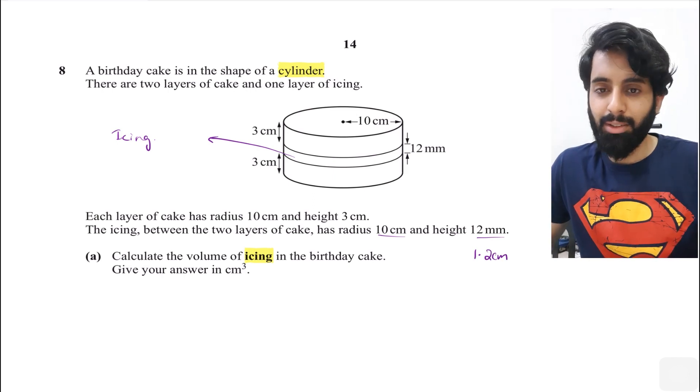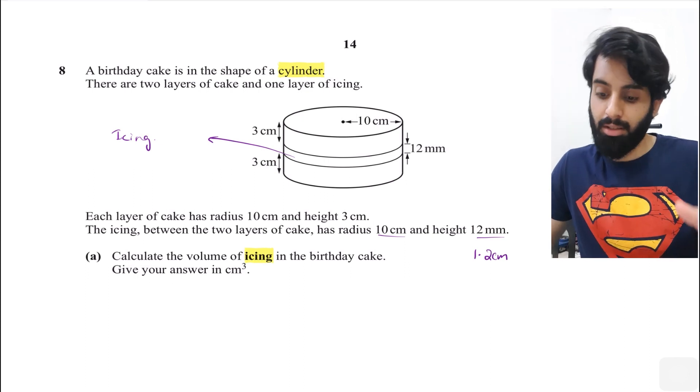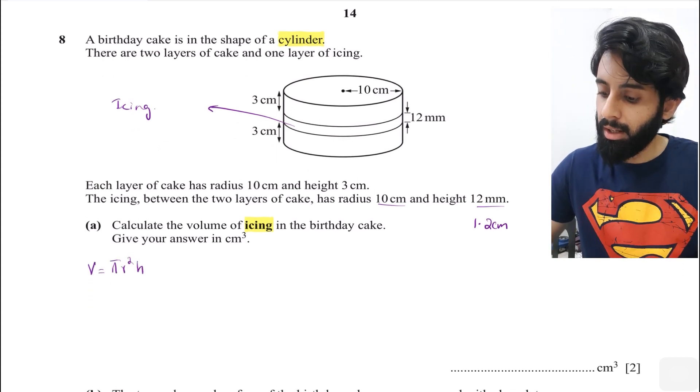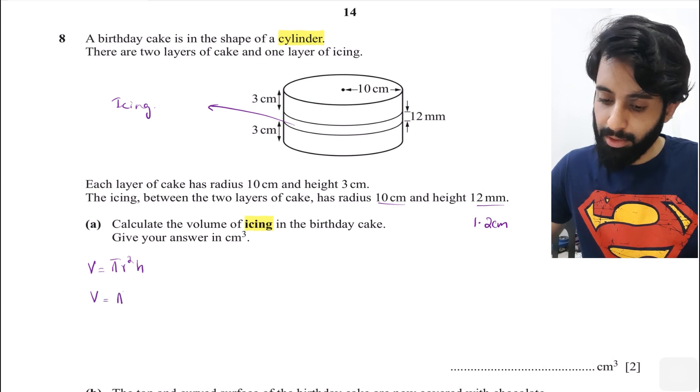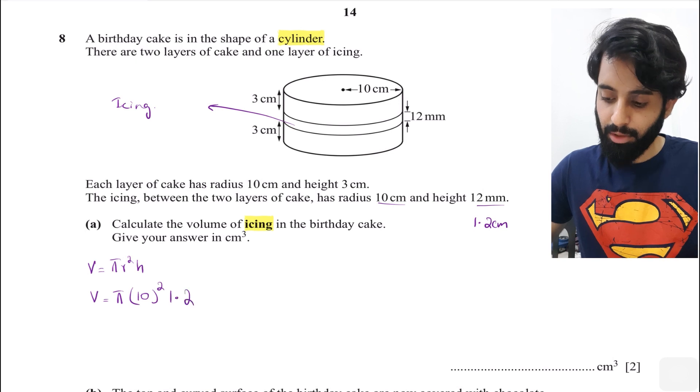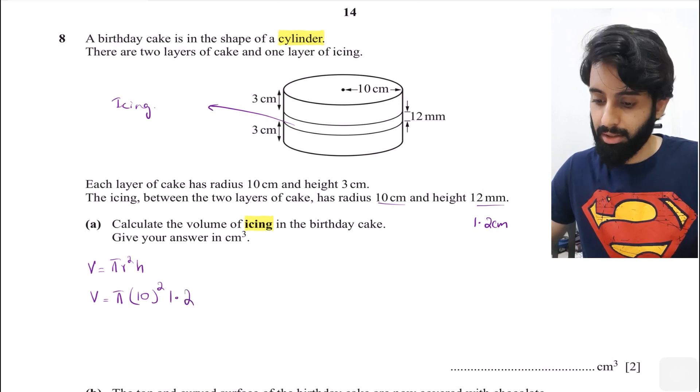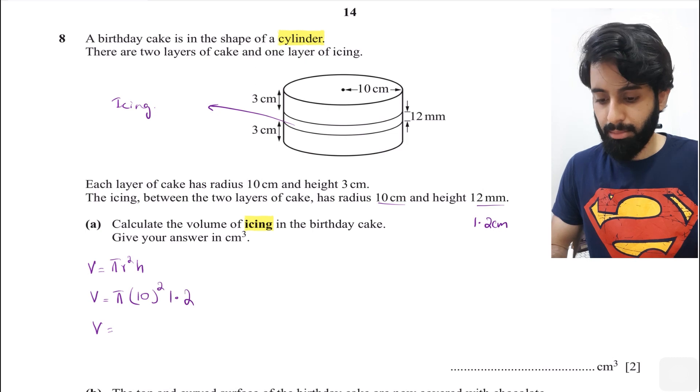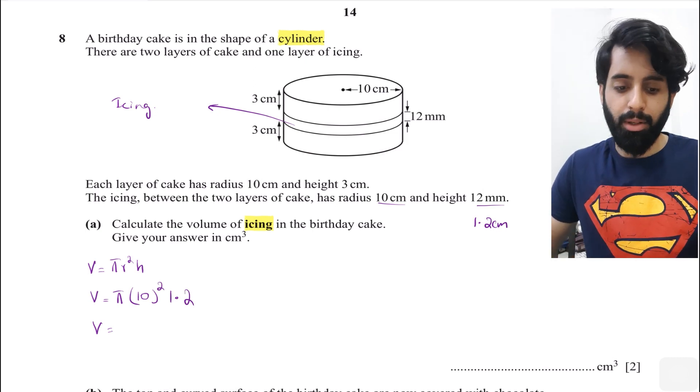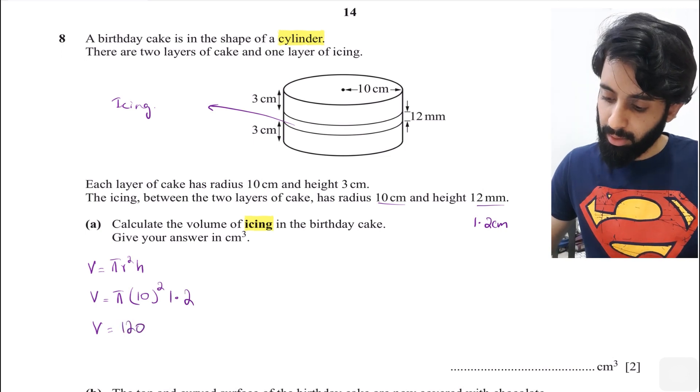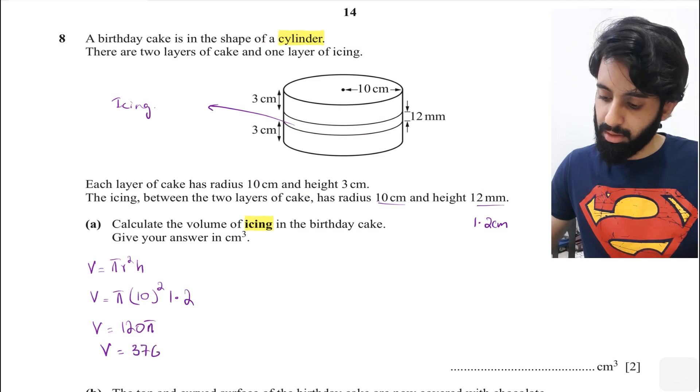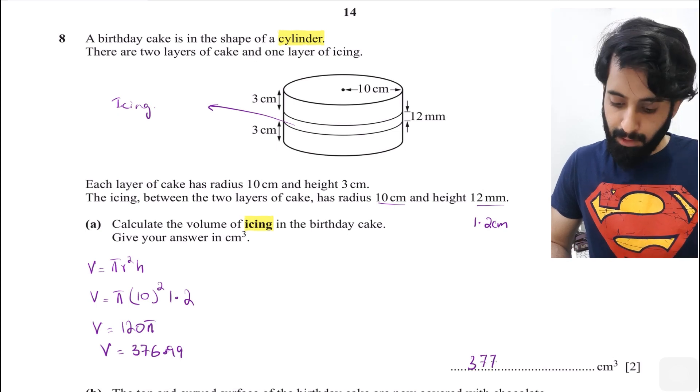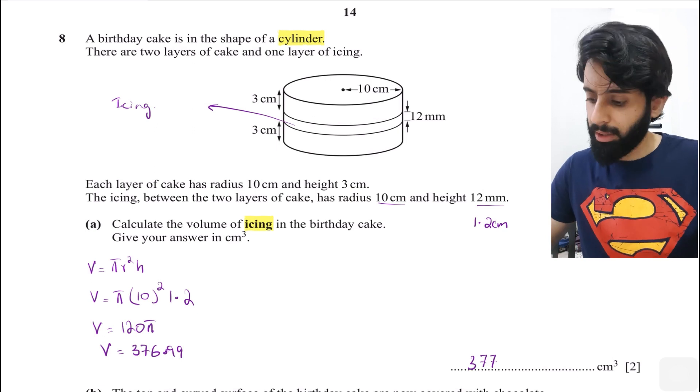The icing is in the form of a cylinder with radius 10 cm and height 1.2 cm. Volume of a cylinder as we know is equal to πr²h. So the volume here is going to be π times 10 squared times 1.2. Let's work this out using a calculator. π times 100 times 1.2 gives us 120π, which turns out to be 376.99, which when rounded to three significant figures is 377 cm cubed. So that was part A.